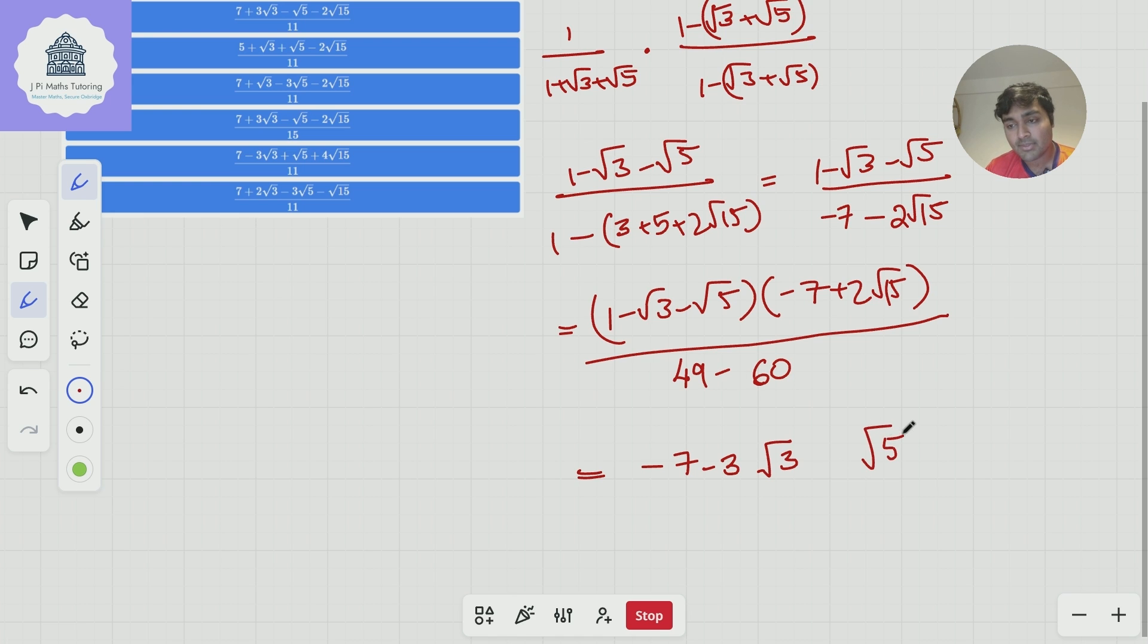What about the root 5 term? Well similar thing, we can get root 5 by doing minus root 5 times minus 7 that's positive 7, but then I can also do minus 3 times 2 root 15 and the root 3s all come together to give me a 3, so that's going to be plus 7 root 5 minus 6 root 5, that's just plus one lot of root 5. Now how can I generate a root 15 term? Well the only way I can do that is 2 root 15 times 1 so that's just plus 2 root 15 and that's all over negative 11.